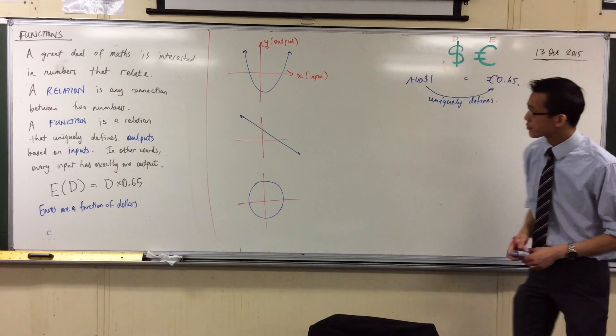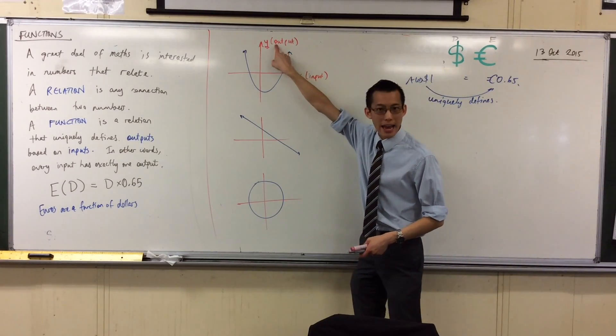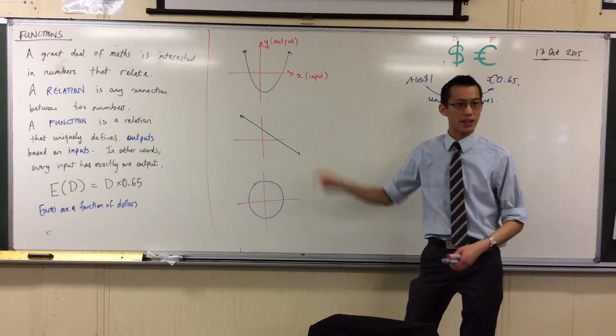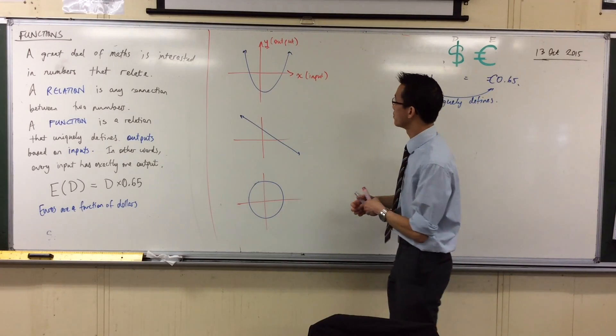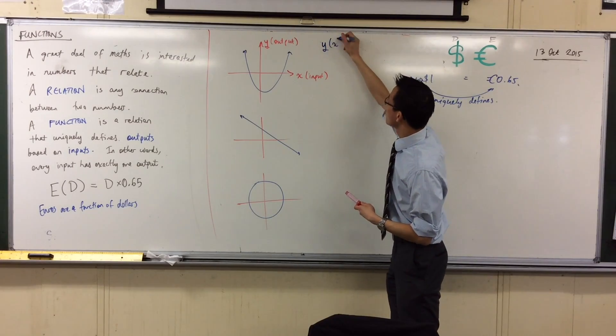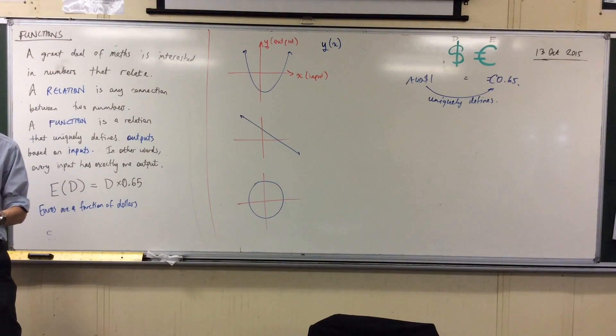The classic name, the classic labels we give to our inputs and outputs are x and y. x is usually our input and y is usually our output. So what you've got here is y as a function of x. The way I'm going to write that is like so. We're repurposing old notation, these brackets, for this new purpose.